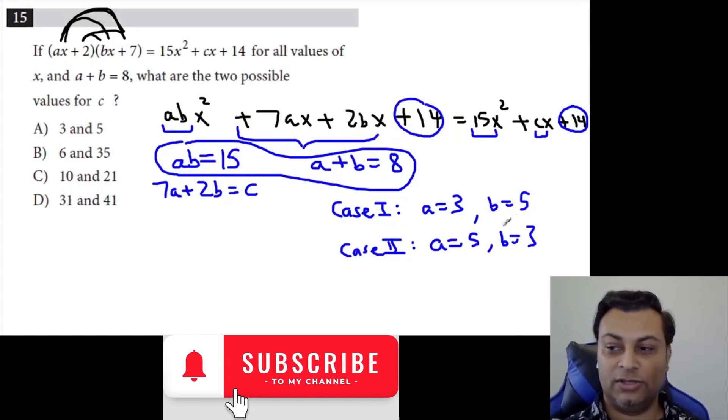So now, in case 1, where A is 3 and B is 5, the value of C is determined from 7A plus 2B. So one possible C is 7 times 3 plus 2 times 5. I'm using case 1 for my A and B values. This comes out to 21 plus 10, which is 31. So the answer is D.